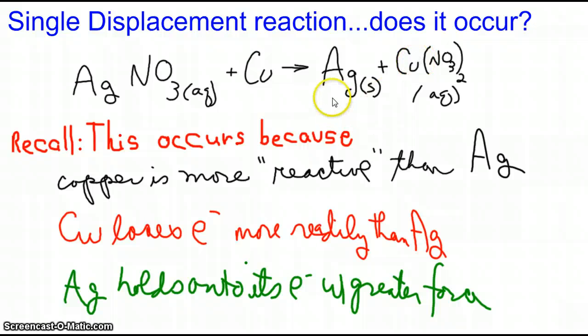The copper can displace the silver, producing silver metal and copper. And it has to do with the hold on the electrons that copper versus silver has.